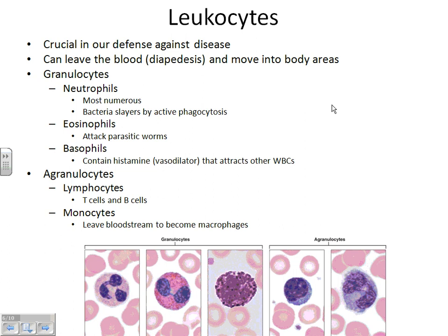The first three white blood cells are grouped together because they look grainy under the microscope — they have little dots in them. The first one is a neutrophil, and its nucleus looks funny — it's called multi-lobed. Neutrophils are the most numerous and most important of all your basic white blood cells. They are phagocytes — they eat bacteria that aren't supposed to be there, and they're the first ones to attack.